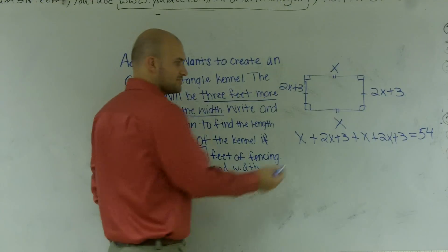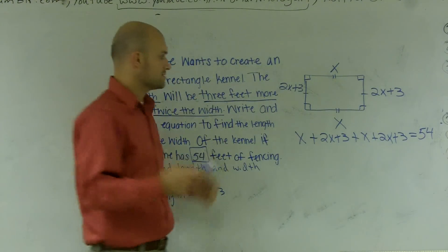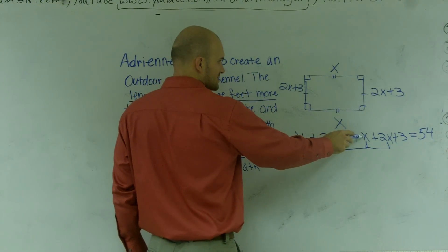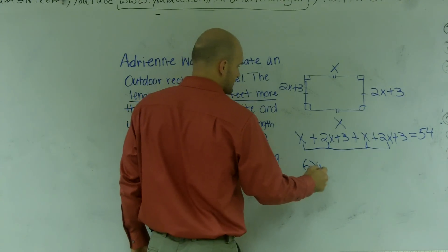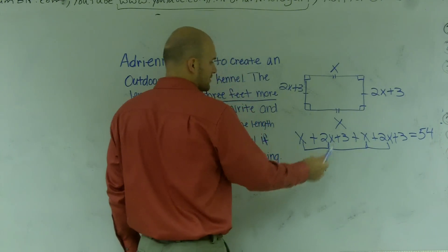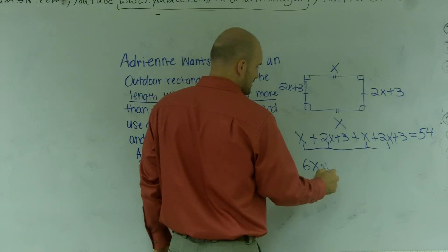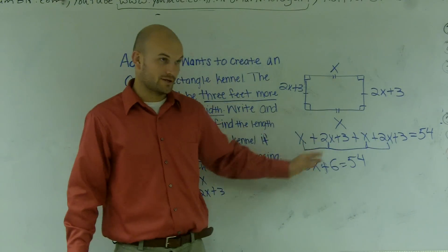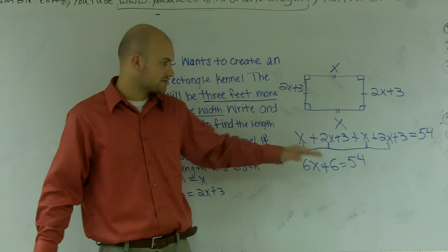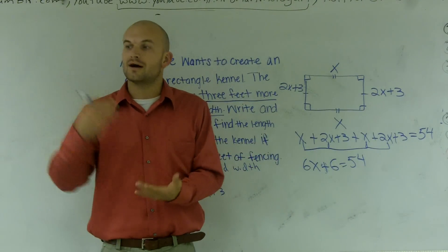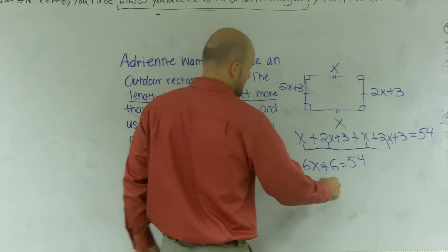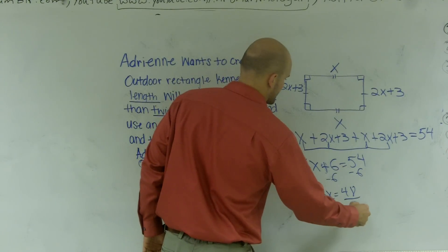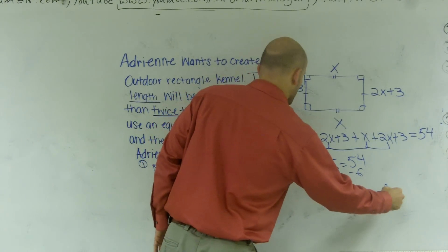Now we have to combine like terms — remember the black markers and the red markers? I can only combine like terms. x plus 2x is 3x, plus x is 4x, plus 2x is 6x. Then 3 plus 3 is 6. So we get 6x plus 6 equals 54. This is a two-step equation. You always undo addition and subtraction first, so subtract 6: 6x equals 48. Divide by 6: x equals 8.